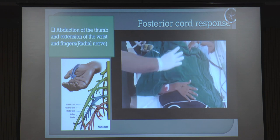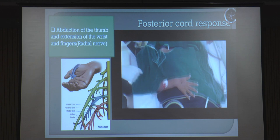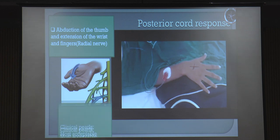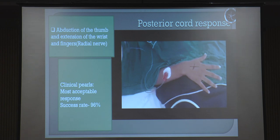This is a posterior cord response - extension of the cord. Always go for a posterior cord response as an acceptable response. If you are getting wrist extension, try to get finger extension, because the posterior cord response is the most acceptable response. The success rate with posterior cord response is almost 96%. So search for posterior cord response if you are getting a lateral cord response. And if you are getting a posterior cord response, don't waste your time searching for any other response.